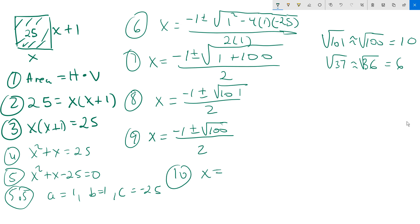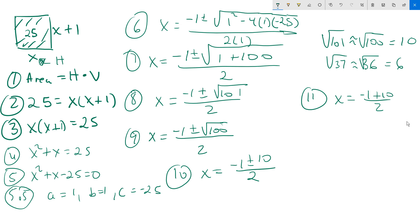So x equals negative 1 plus or minus 10, set over 2. Now we have to be careful here, because x represents the horizontal side of the shape, which has to be a positive quantity — you can't have a side that's negative. Therefore, we take the positive solution: x equals negative 1 plus 10 over 2, which is 9 over 2, approximately 4.5. An approximation is more than good enough for our purposes.